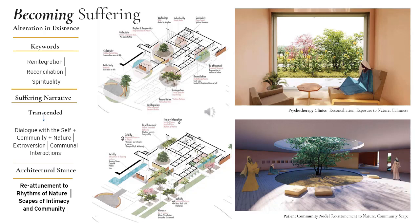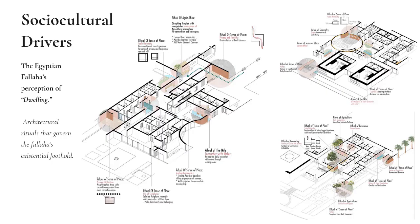The third phase — transcended suffering — features reconciliation, reintegration, and spirituality. The dialogue becomes between the self, community, and nature. The architectural stance fosters reattunement to the rhythms of nature and incorporates communal and social spaces to reintegrate patients into their cultural and social fabric. Research and applied fieldwork informed the understanding of architectural rituals governing the Egyptian Falleha's perception of dwelling. The rituals of the Nile, colors, geometry, and the sense of place as induced by the House of the Falleha were thoroughly studied and reflected in the design, as shown by the illustrations.